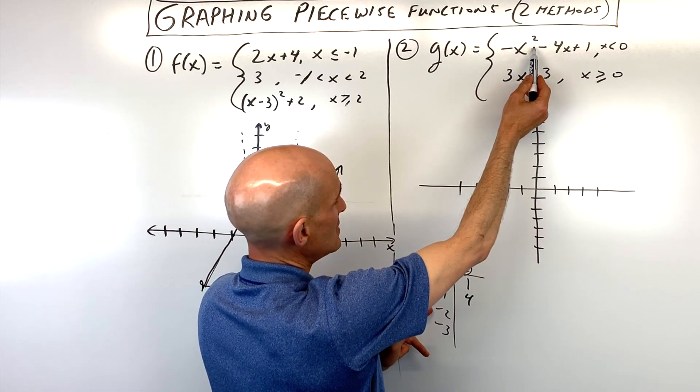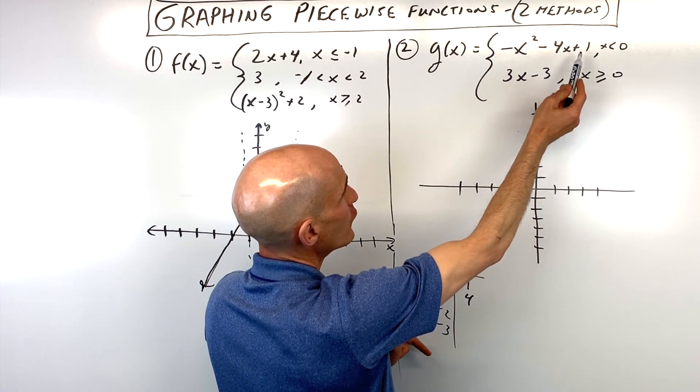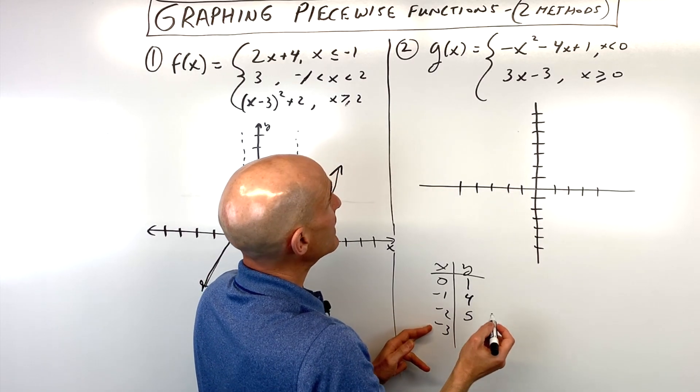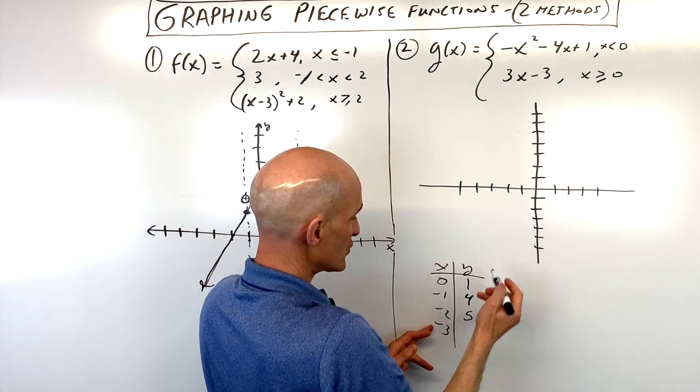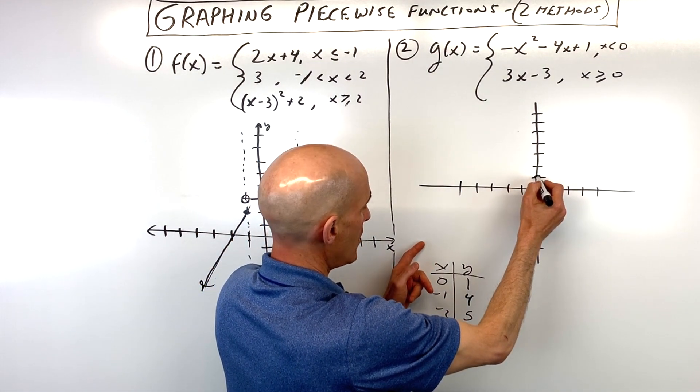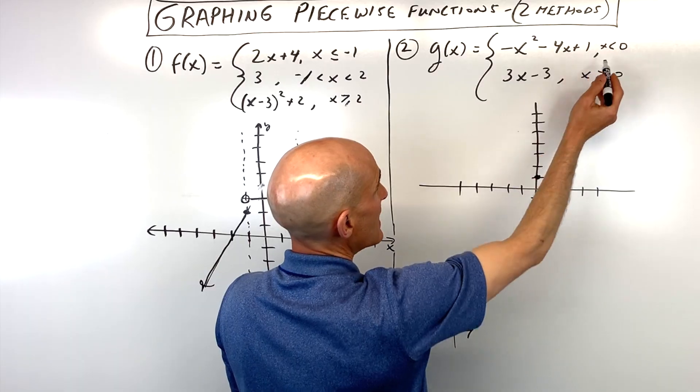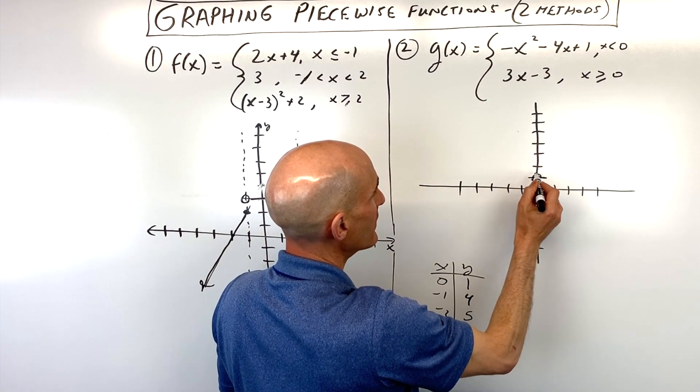Check my math here. So this would be negative 2 squared is 4, that's negative 4 plus 8, that's going to give you 4 plus 1 is 5. And negative 3 is going to give us negative 9 here plus 12 is 3 plus 1 is 4. So if we graph these points, we get 0, 1. And remember how that was less than but not equal to 0, so this is actually going to be open, open not including that point.